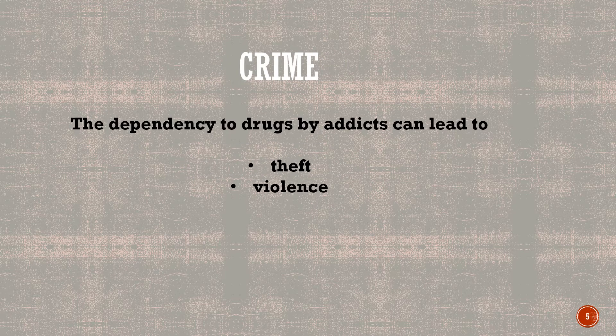Crime — why will crime be involved as one of the consequences? Because if one is dependent on a drug, they can lead to theft and violence. They will crave the drug, and if they have no money, they will take someone's money and end up committing crimes of violence.